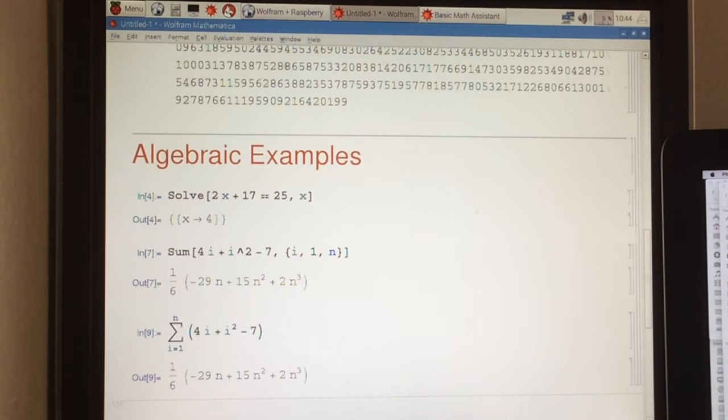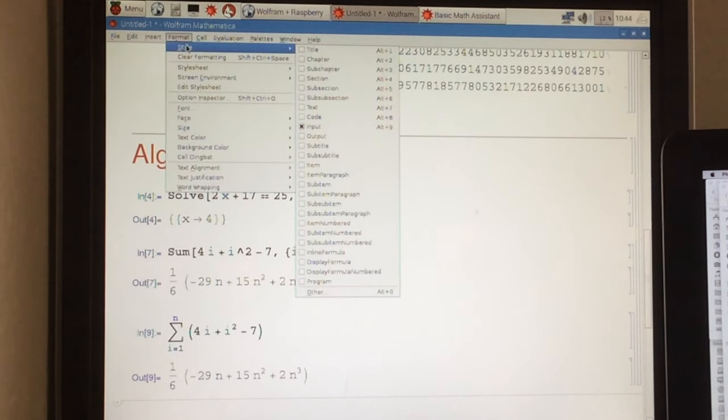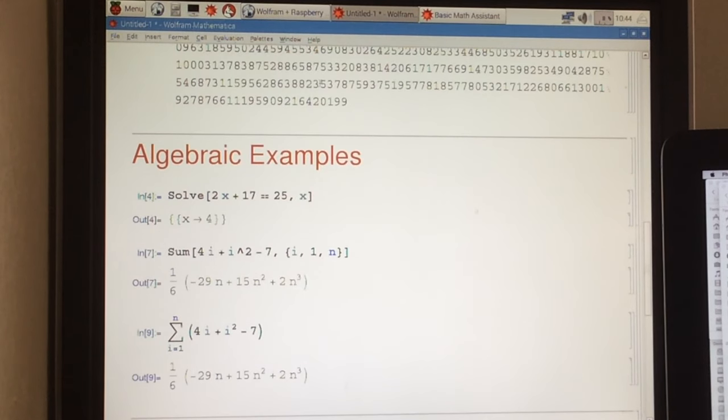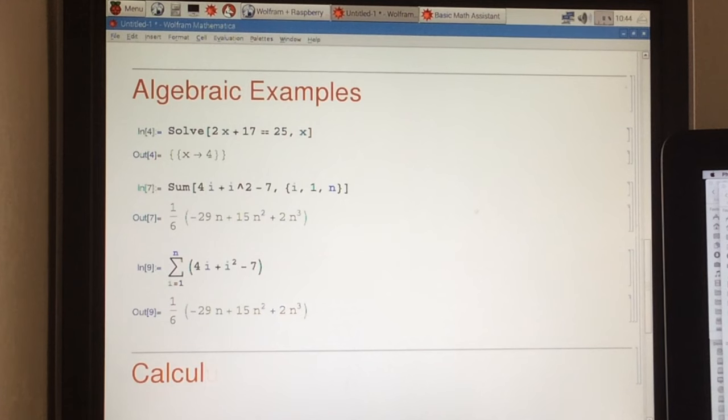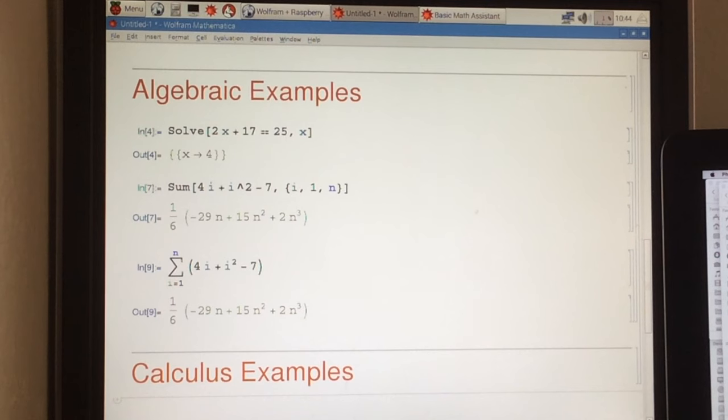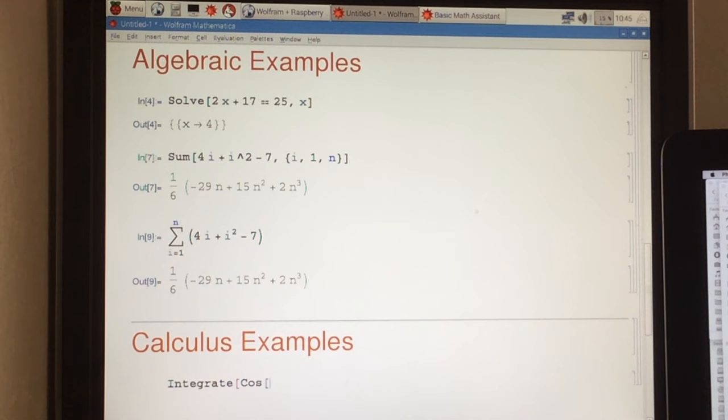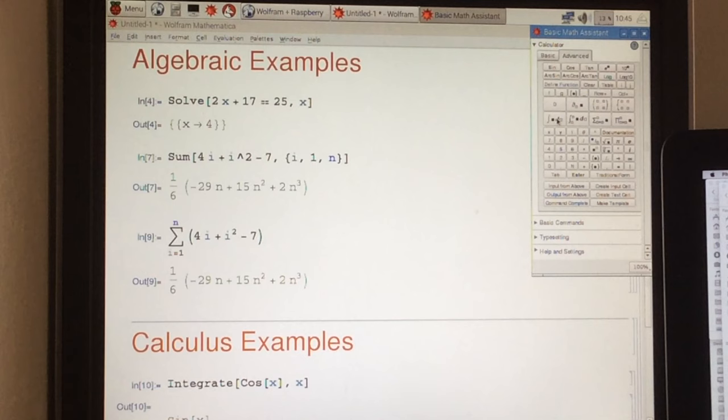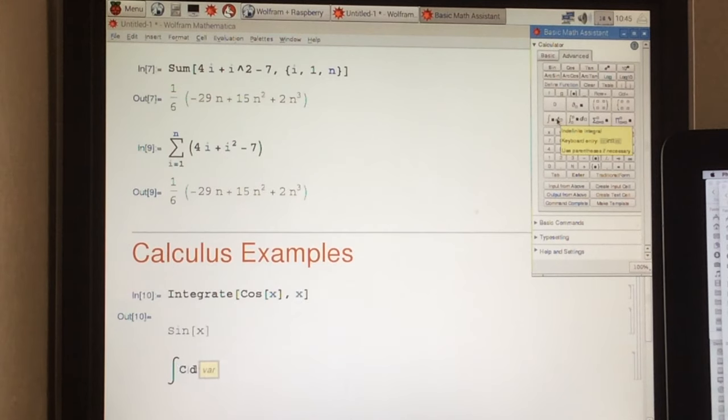So yeah, there's some algebraic examples. We can go from there. We can do calculus examples. Let's put in another section. We'll say calculus examples. These are just very simple things. The thing we put in before, I believe, was integrate cosine x with respect to x. That comes back as sine of x. There's a graphic way of doing that. You would just simply say, what's the indefinite integral of cosine of x with respect to x. Now we'll come back with the same thing.